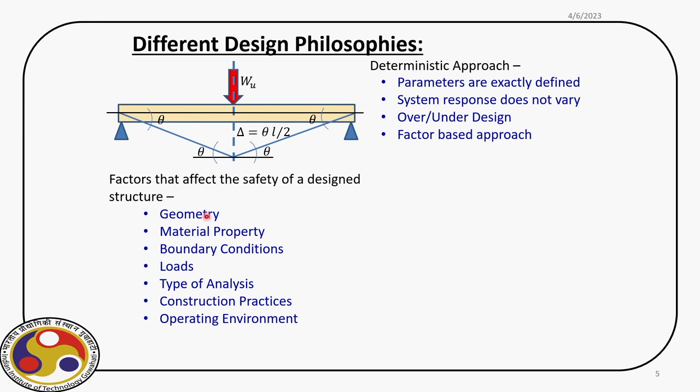To summarize, the deterministic approach has parameters which are exactly defined, the mathematical model is also defined, and we know the system response precisely before starting the design process. The outcome of this design process is either an over-design or an under-design, which itself ensures there is a variation in performance. Overall, this is a factor of safety based approach — the factor of safety or load factor are non-dimensional numbers which ensure the safety of the structure. In this process, we have two major factors: capacity and demand. So long as the capacity is more than the demand, safety is always ensured.